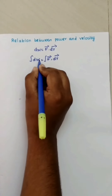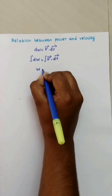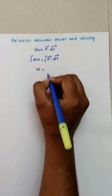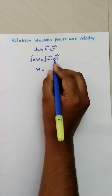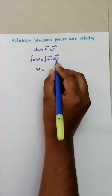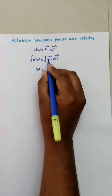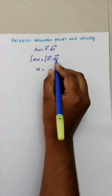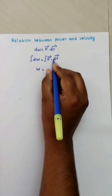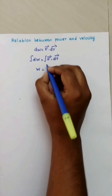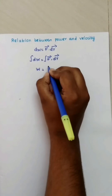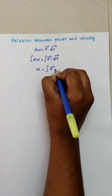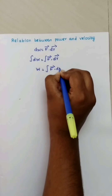Integration of dW equals W. But we cannot take the integral outside because displacement keeps changing. As we apply force, displacement changes — so both are changing terms. Therefore both must remain inside the integral: integration of F vector dot dr vector.